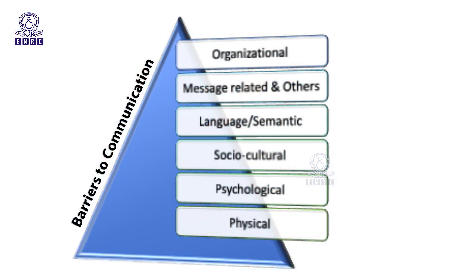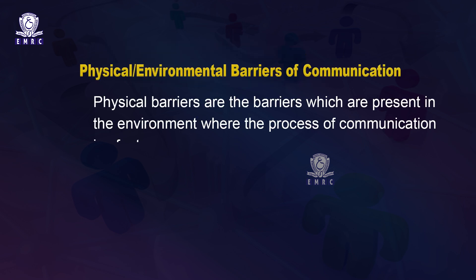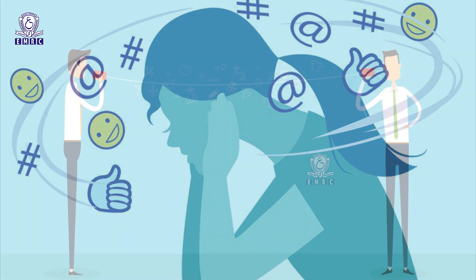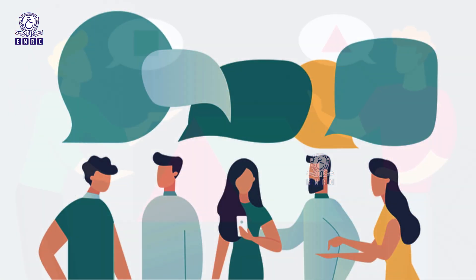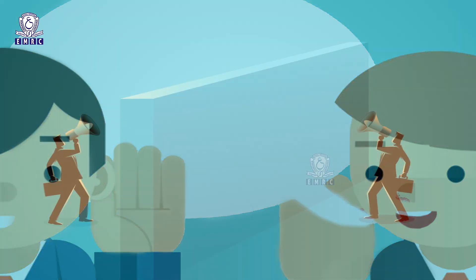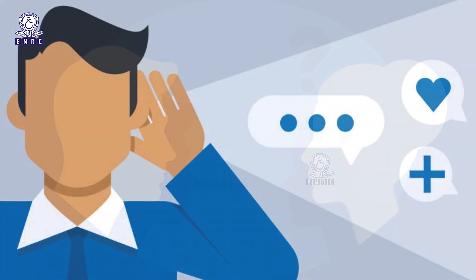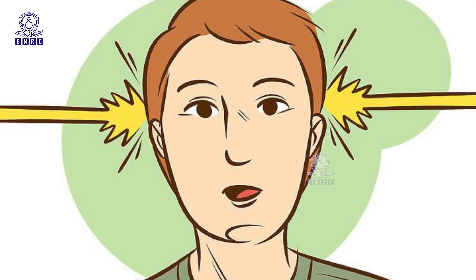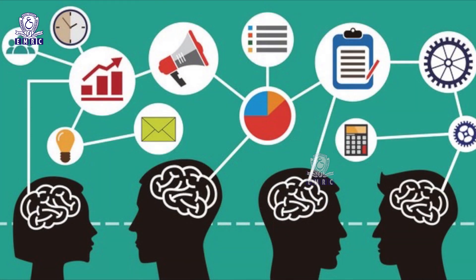Barriers to communication are categorized into various types. The first is physical or environmental barriers, which are present in the environment where the process of communication is taking place. They distort communication by interfering from outside or from an external field, and differ with different places and situations. Physiological barriers are related to the physical health condition or physiological functioning of senders and receivers. For example, if a person is experiencing deafness or any hearing difficulty, it can become a barrier. Inability to read and write due to a physical condition is also part of physiological barriers.